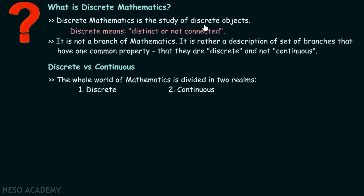Now let's try to understand what is discrete mathematics. Discrete mathematics is the study of discrete objects. Discrete means distinct or not connected. It is not a branch of mathematics; it is rather a description of a set of branches that have one common property — that they are discrete and not continuous.